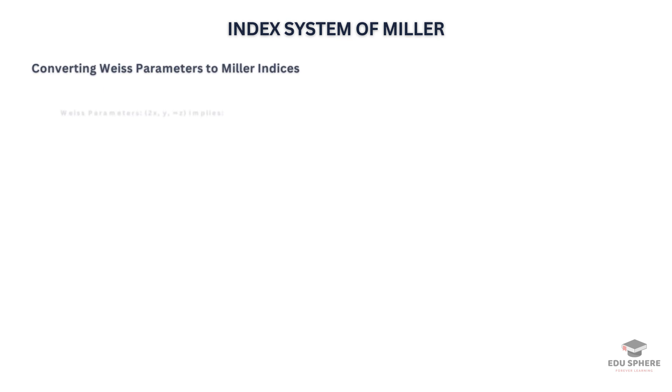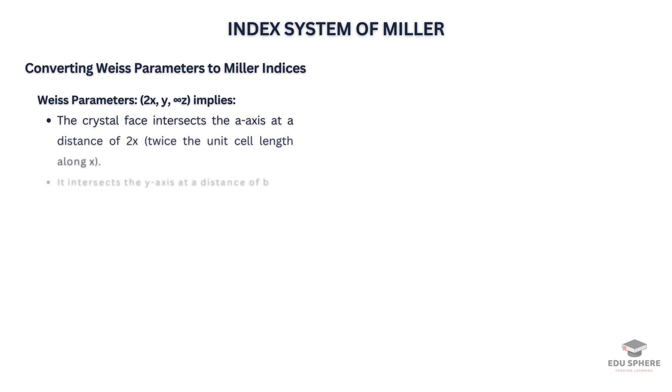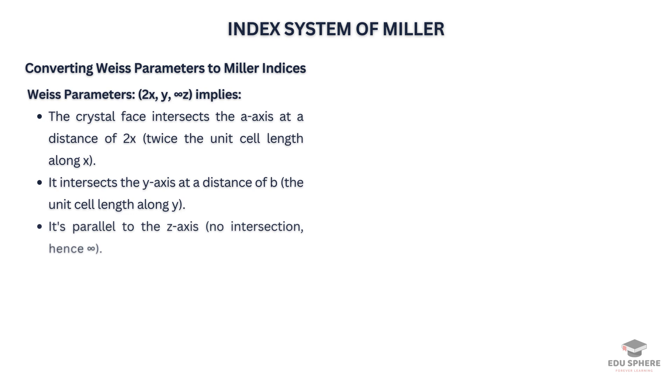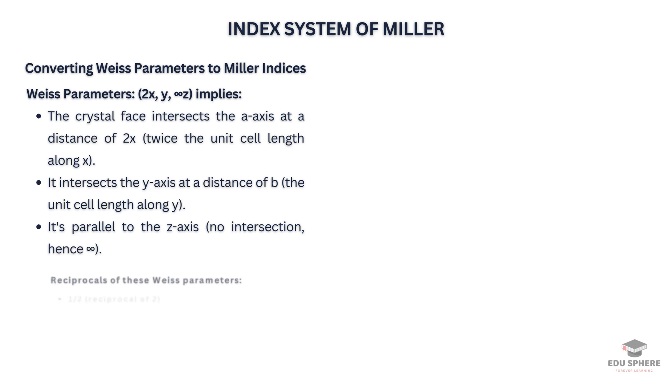Let's take a crystal face with Weiss parameters of 2x, y, and infinity z. This means it intersects the a-axis at two units, the b-axis at one unit, and is parallel to the c-axis. To convert Weiss parameters to Miller indices, we first calculate the reciprocals of these parameters. If a face is parallel to an axis, its reciprocal is zero.